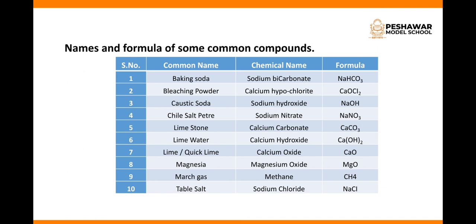Number 4: chili saltpeter — chemical name is sodium nitrate, formula is NaNO3. Limestone — chemical name is calcium carbonate, formula is CaCO3. Lime water — chemical name is calcium hydroxide, formula is Ca(OH)2. Quick lime — chemical name is calcium oxide, formula is CaO. Magnesia — chemical name is magnesium oxide, formula is MgO. Marsh gas — chemical name is methane, formula is CH4. Table salt — chemical name is sodium chloride.